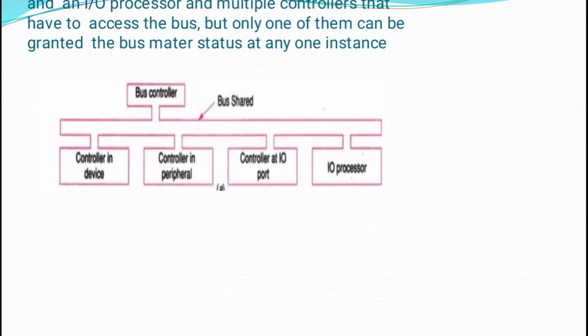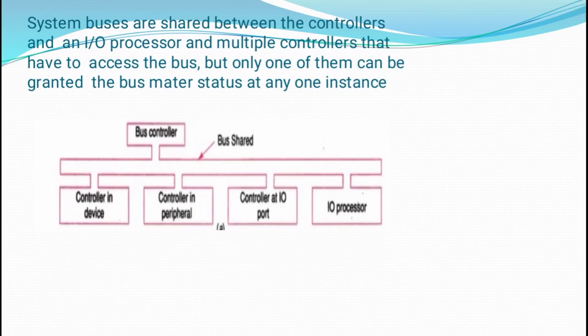The system buses are shared between the controllers and the I/O processor and multiple controllers that have to access the bus, but only one of them can be granted the bus master status at any one instance, as represented in this figure.